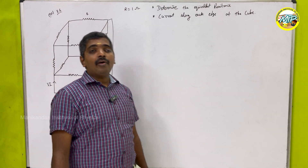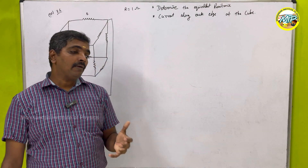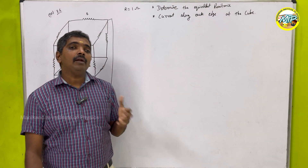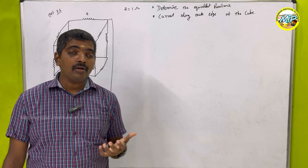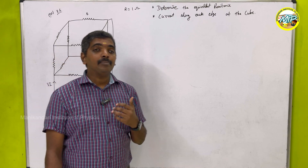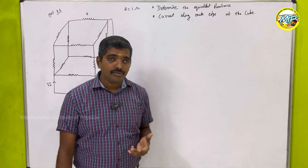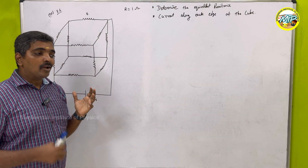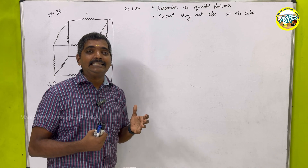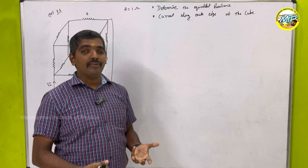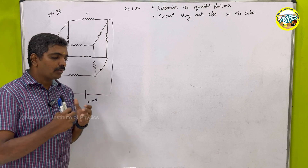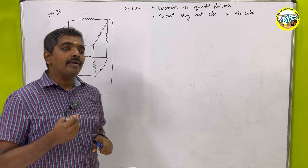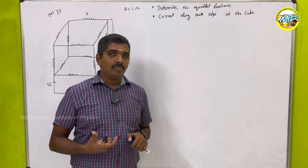To find the current I need to know the equivalent resistance since I know my EMF. To find the equivalent resistance I should solve using series and parallel combination, but in this problem I cannot use series and parallel combination of resistors since it is in a cubical configuration — it is quite complicated. So I am going to use Kirchhoff's loop rule to solve the problem.